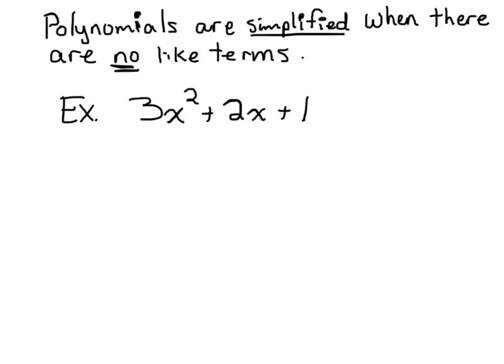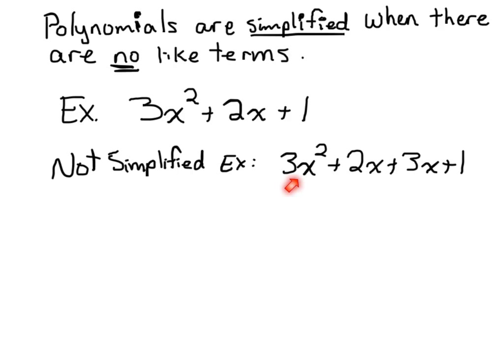Let's look at an example that's not simplified. In this example, we have an x squared term, an x term, another x term, and a constant term. Because we have two terms that are like terms in our polynomial still, this is not a simplified polynomial.